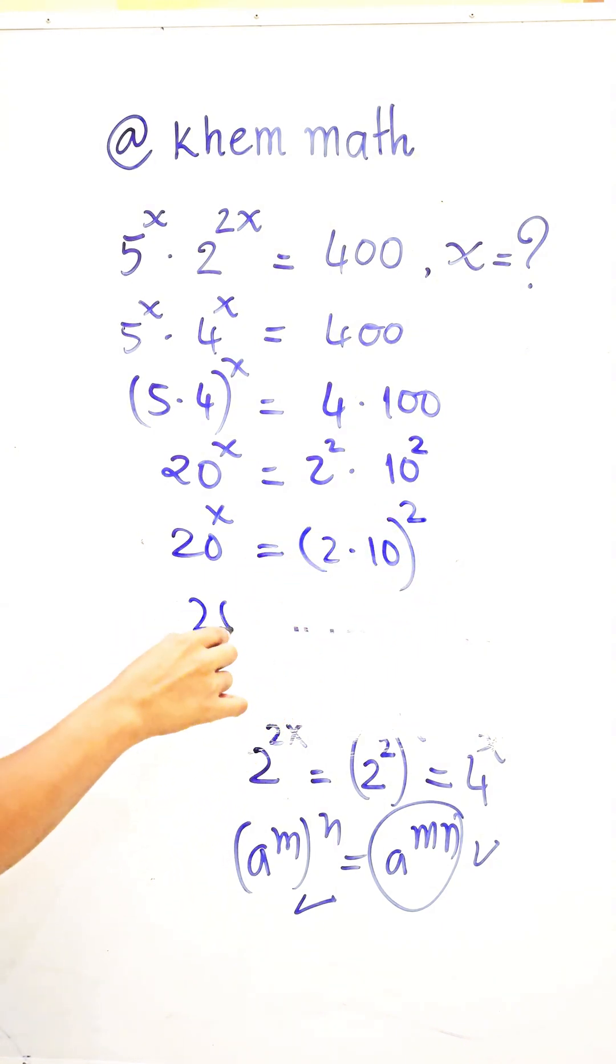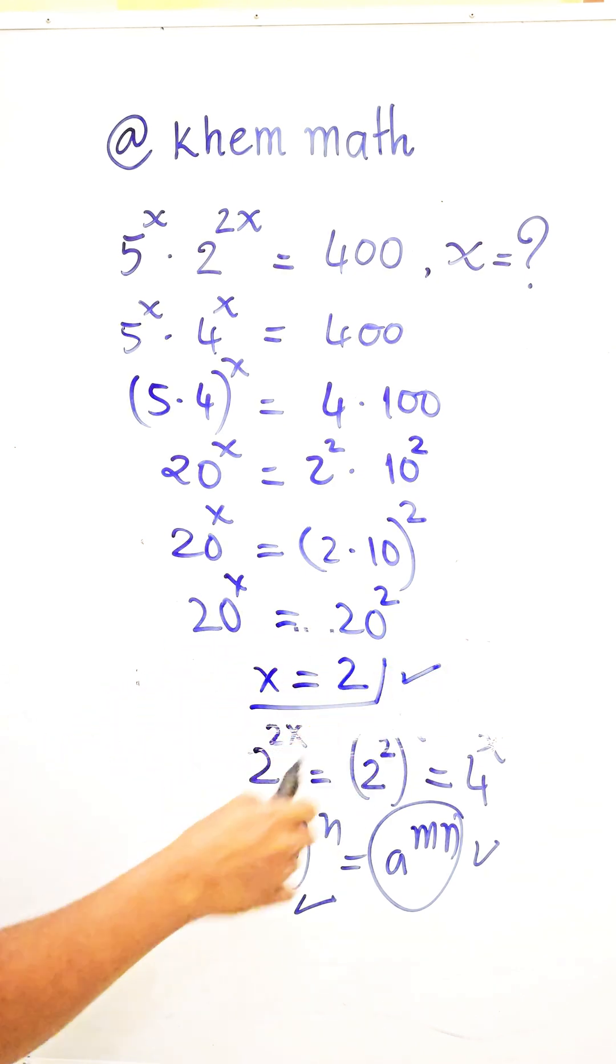And here we get 20 power x is equal to 20 squared. It's also 20 and 20. So we get x is equal to 2, which is our answer.